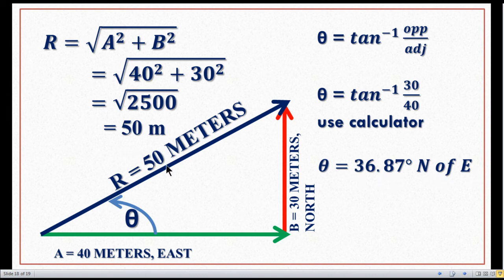R equals 50 meters is the resultant vector. So in such a way we find out the resultant vector using two methods: one is the graphical method, the other is by calculation or using Pythagorean theorem. Thank you for being with us.